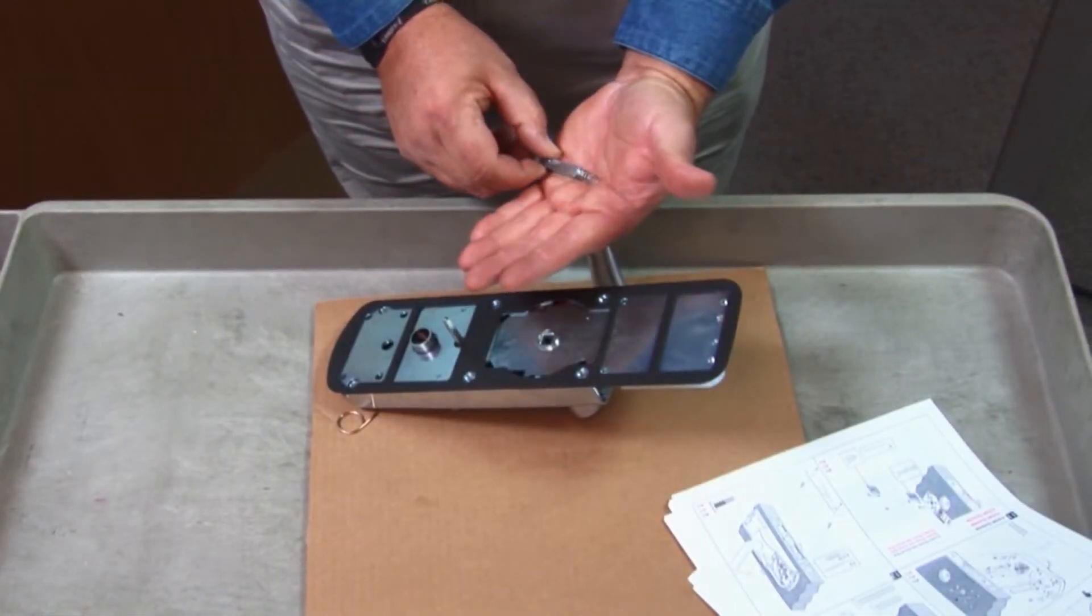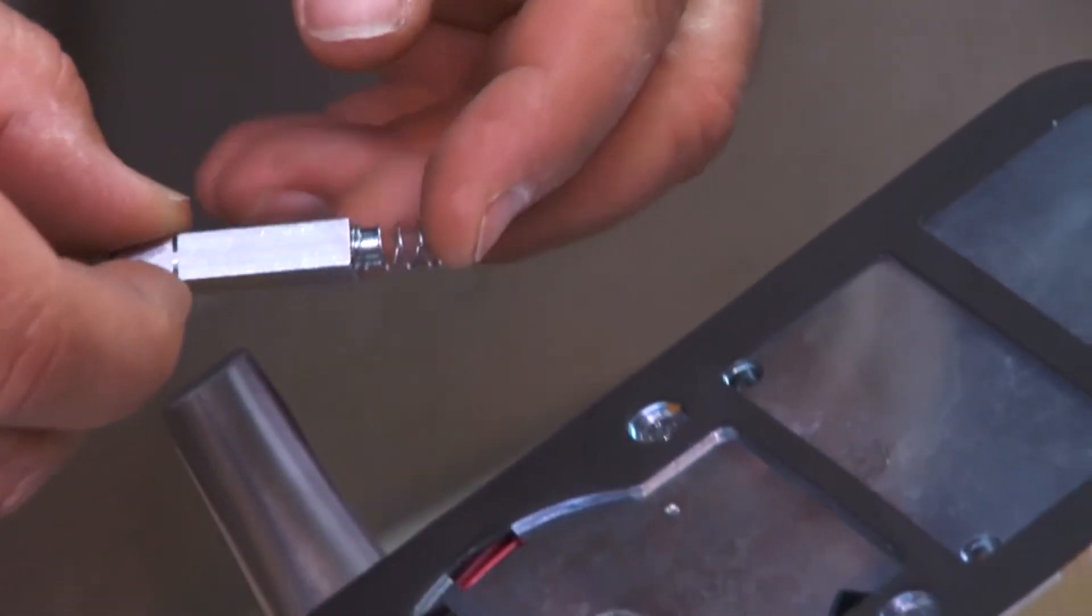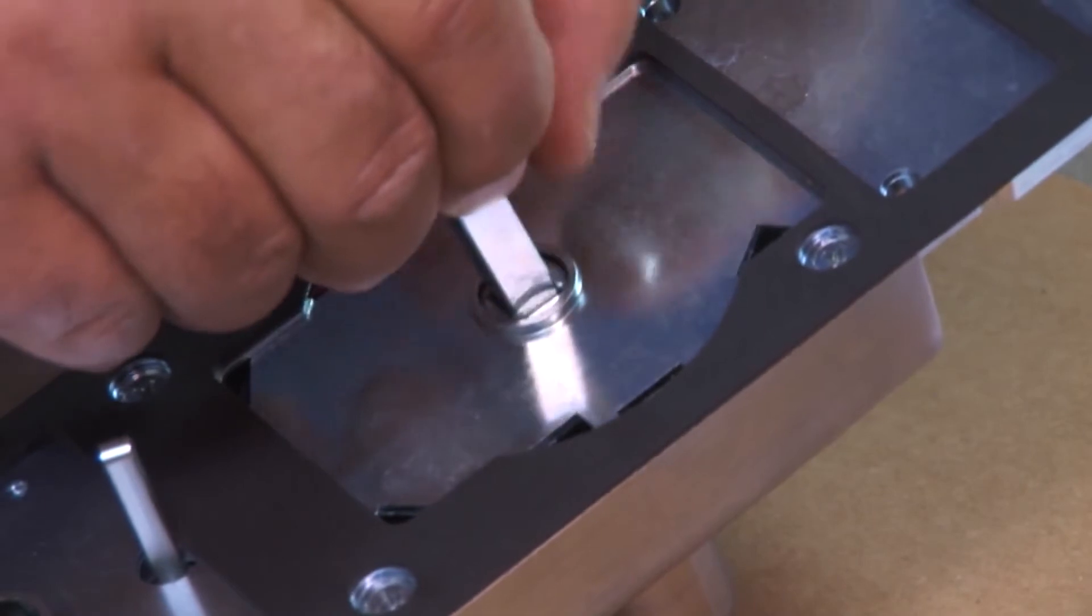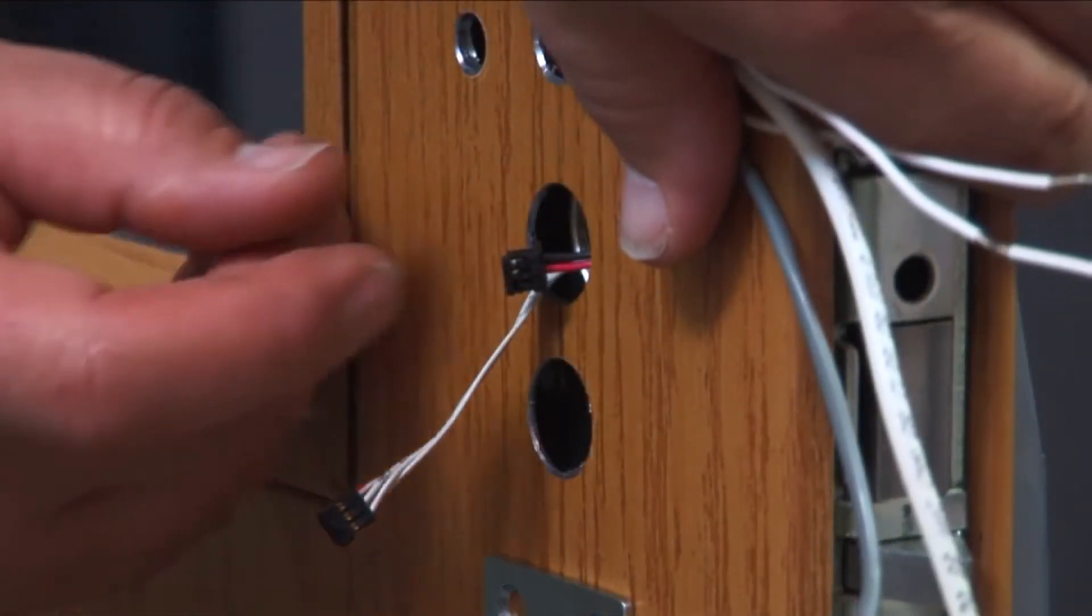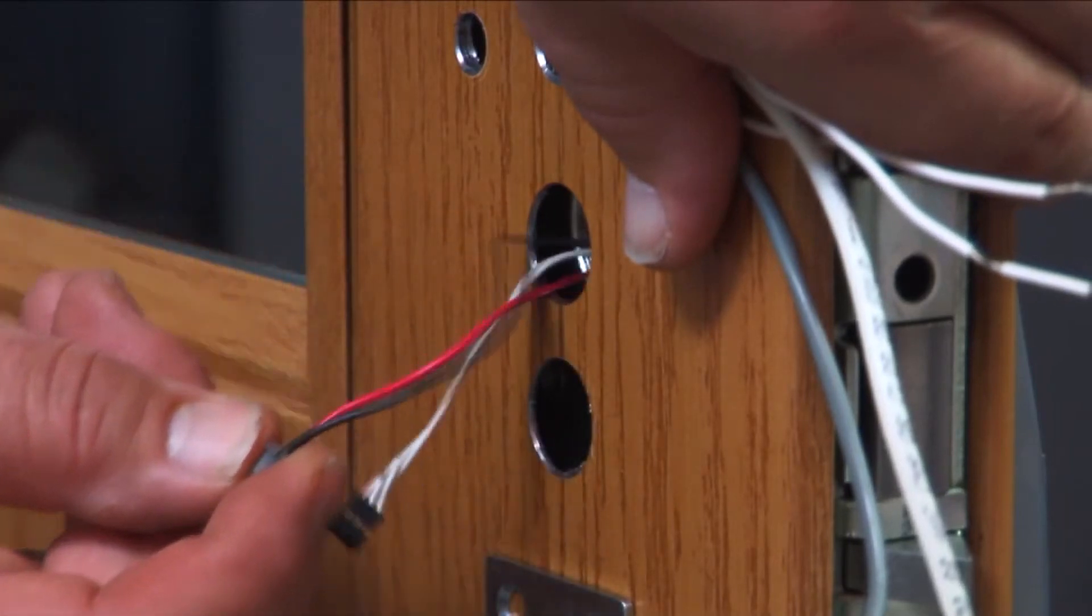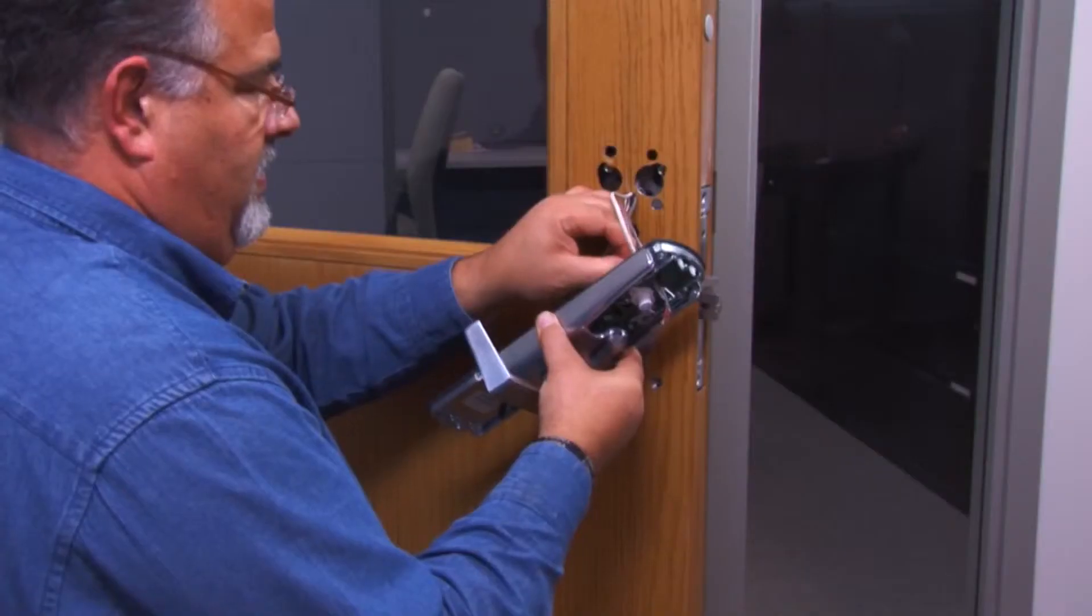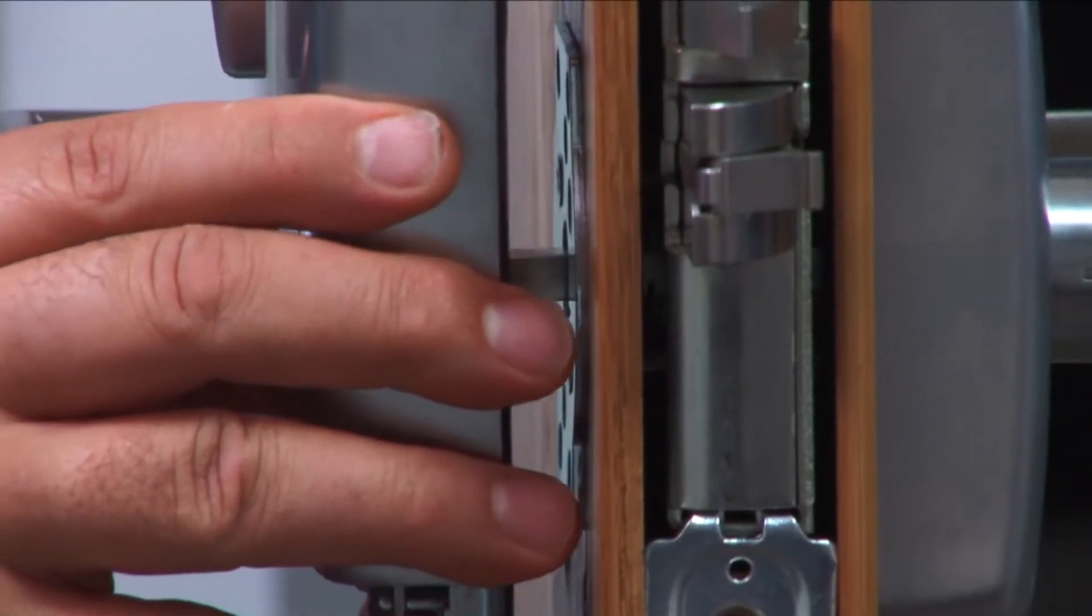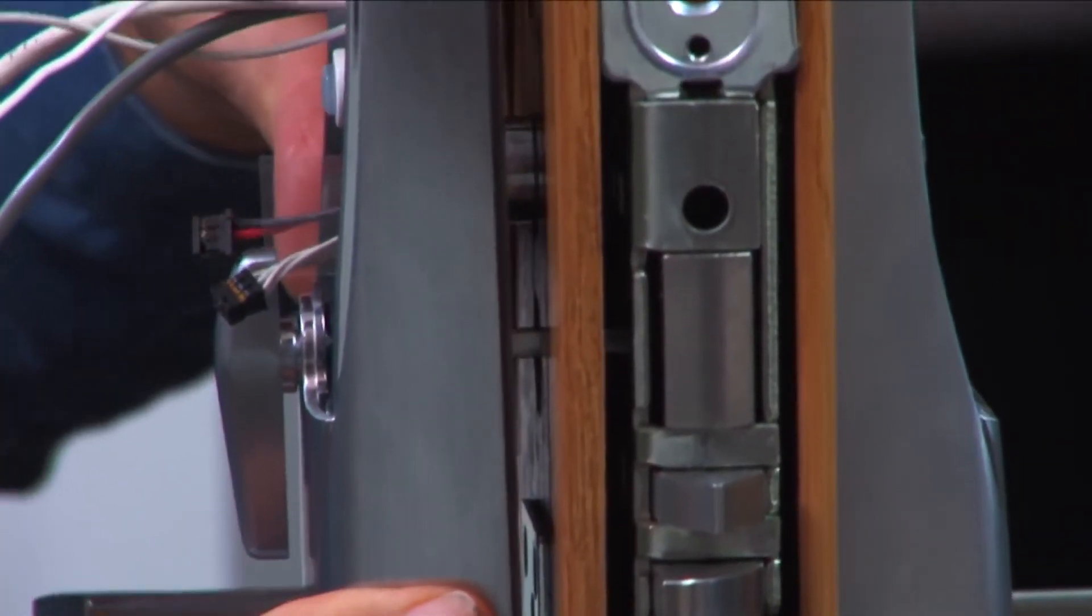Place the spring onto the post end of the second spindle and insert it into the inside assembly with the beveled square end pointing outward. Carefully feed all wires including the deadbolt position switch wires through the conduit holes of the inside assembly while aligning the spindle with the mortise lock hole. Push the assembly flush to the door.